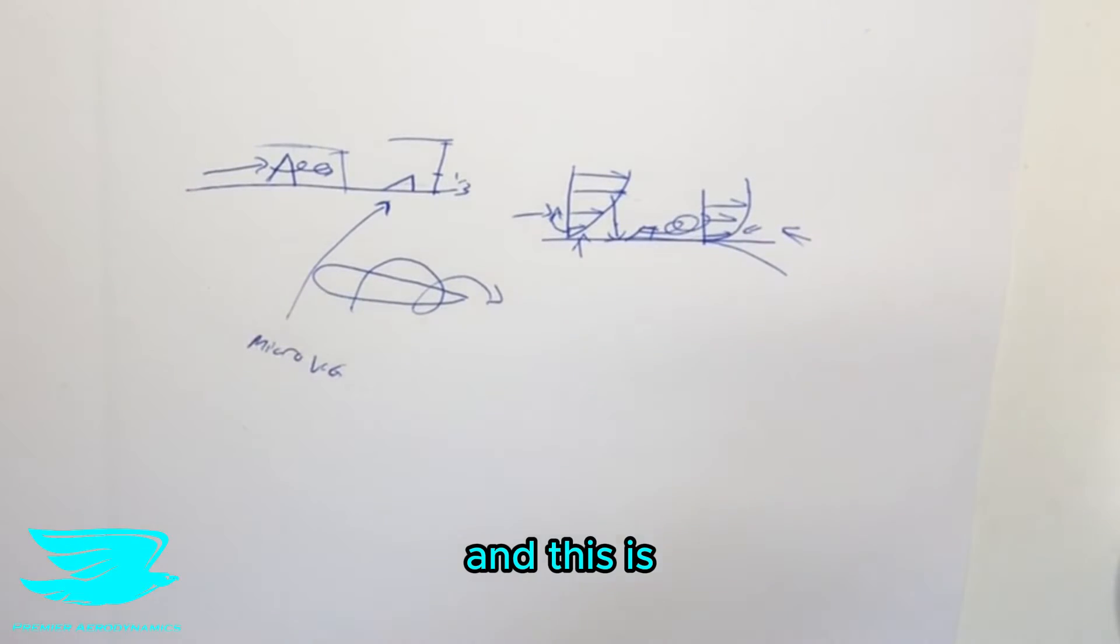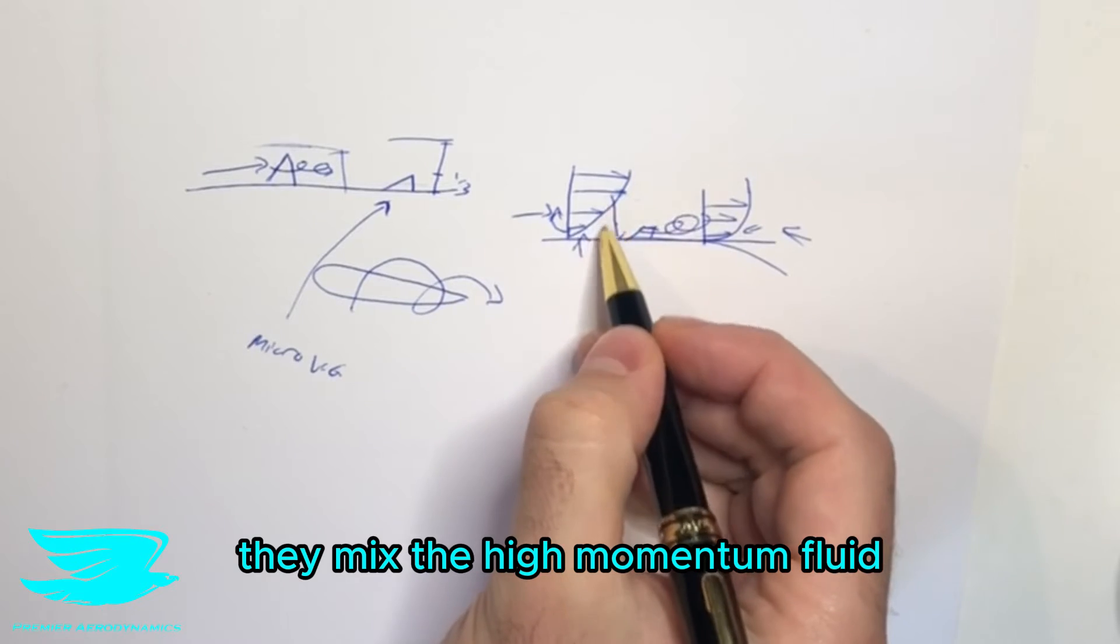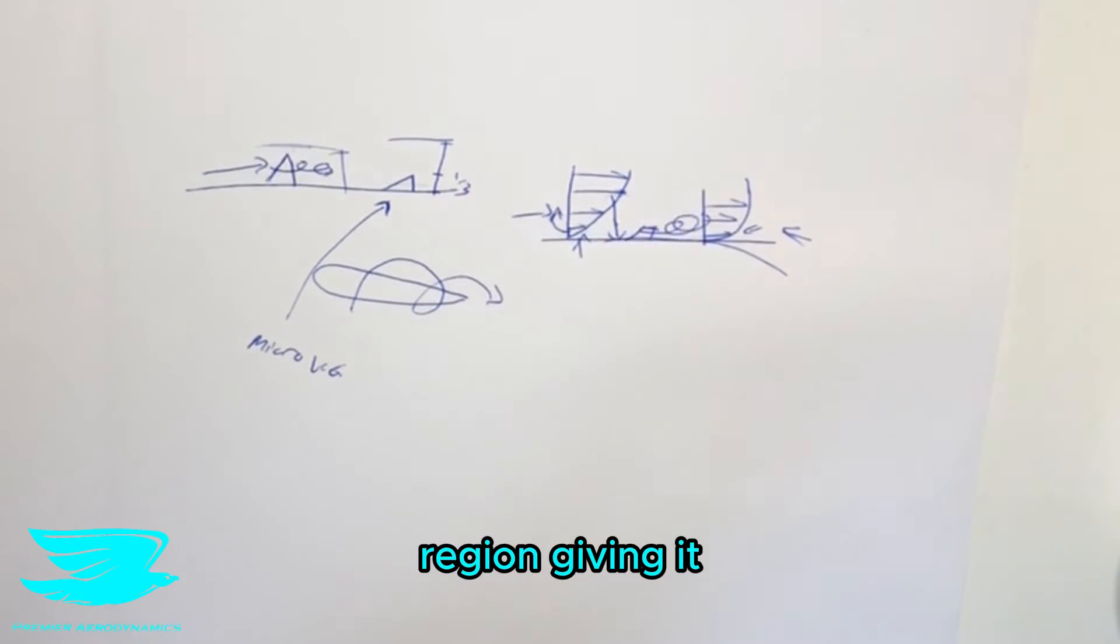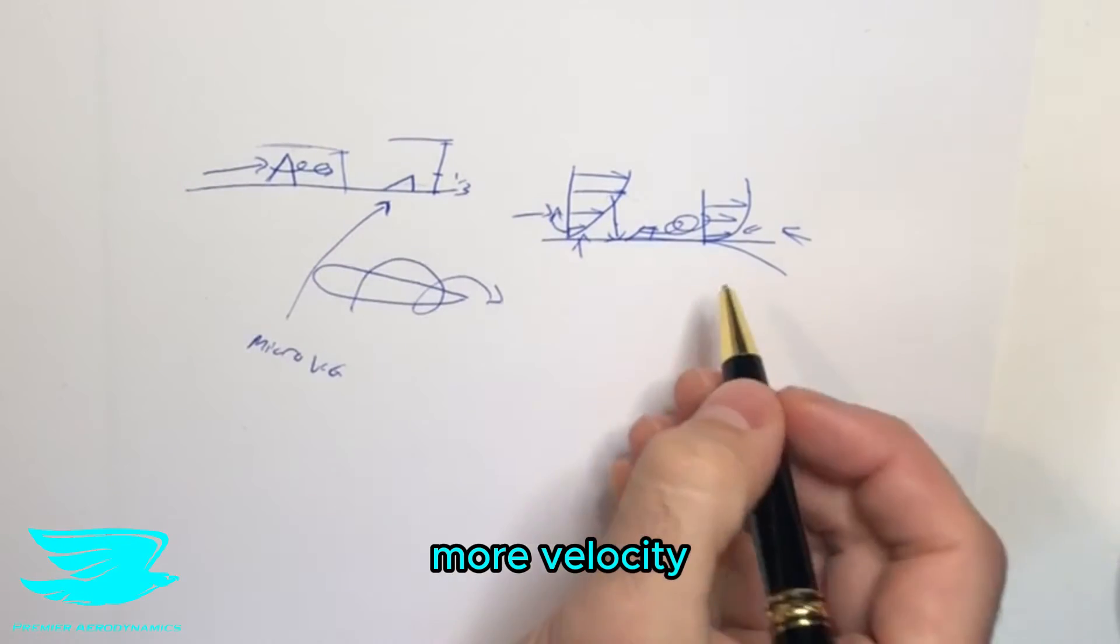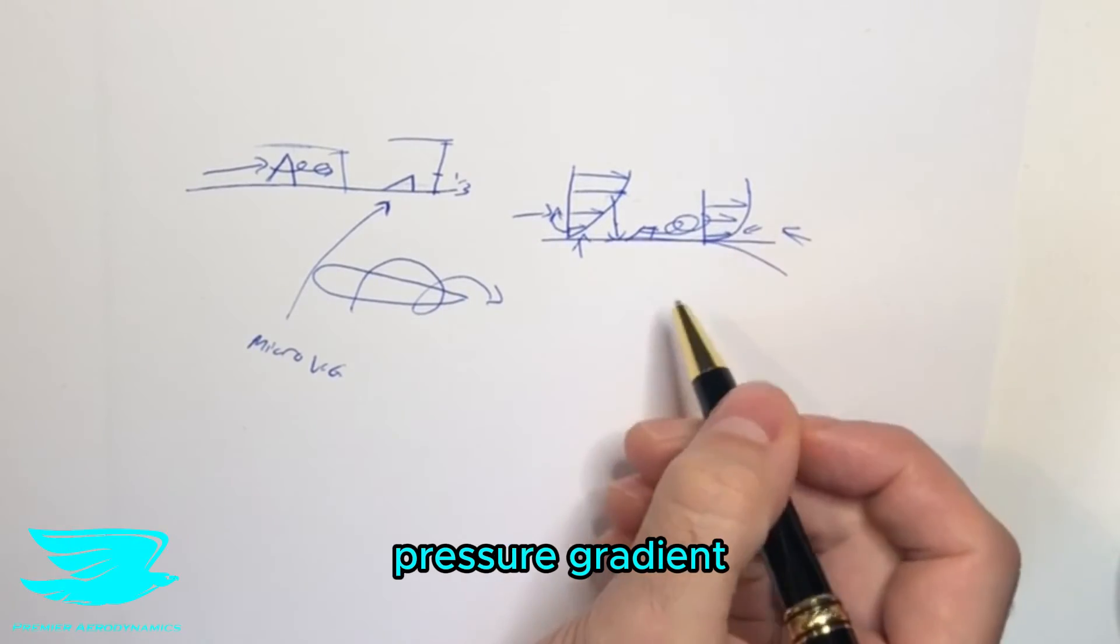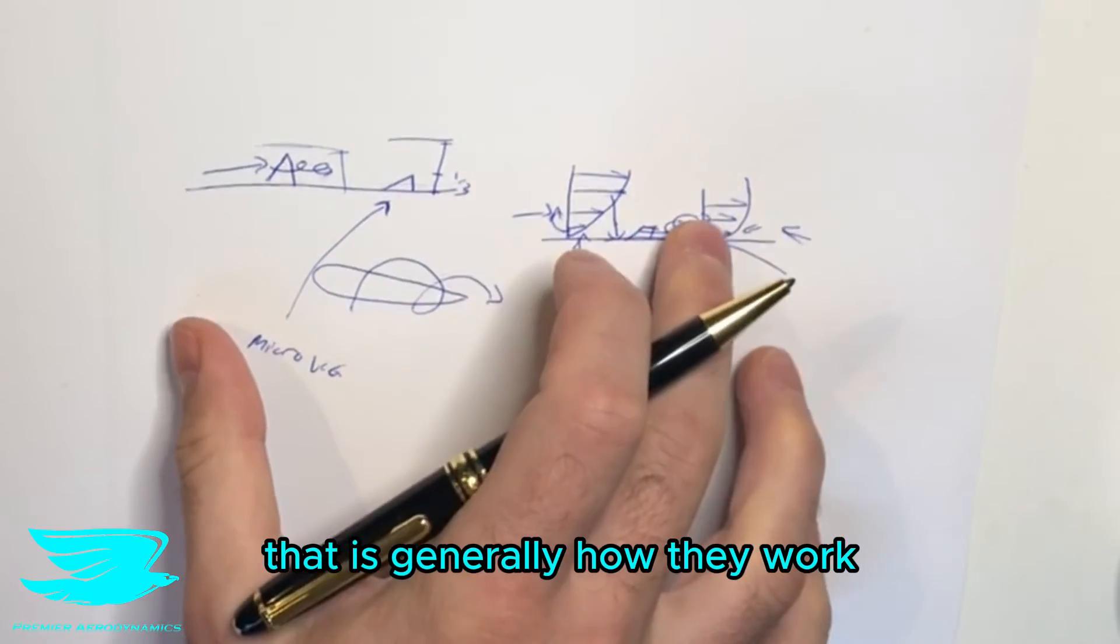And this is how boundary layers, how these vortex generators work. They mix the high momentum fluid into this lower region, giving it more velocity to resist this adverse pressure gradient and keep the flow attached. That is generally how they work.